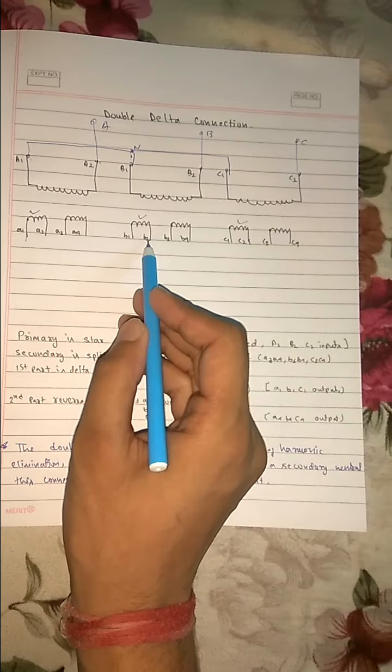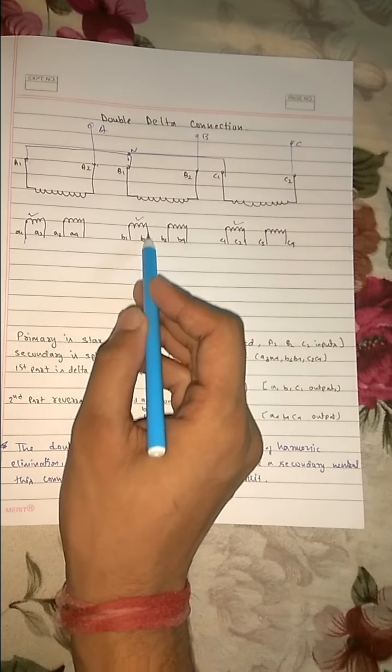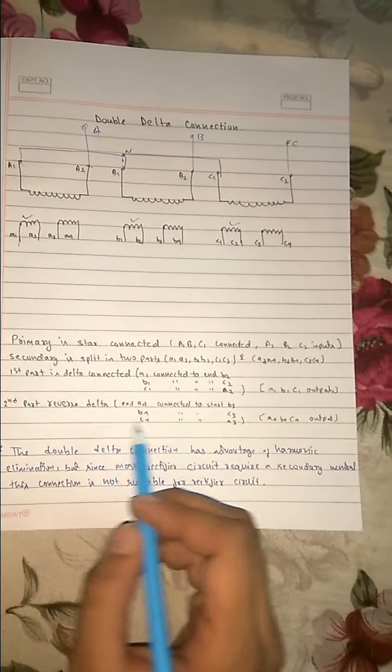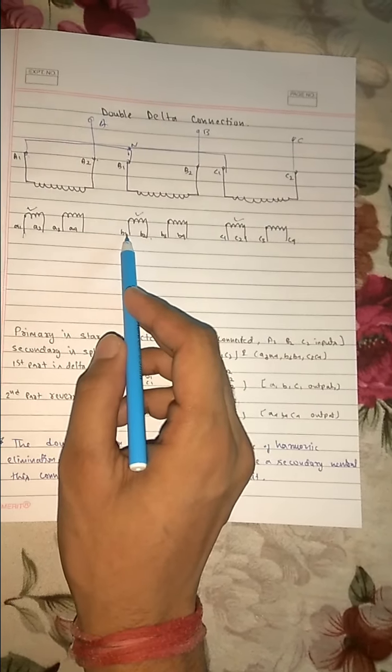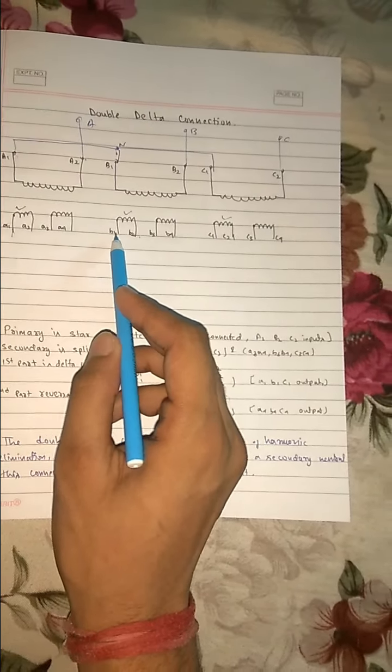A1 of the first is connected to B2. This is the last part. So A1 is connected to the end B2. B1 is connected to the end C2.